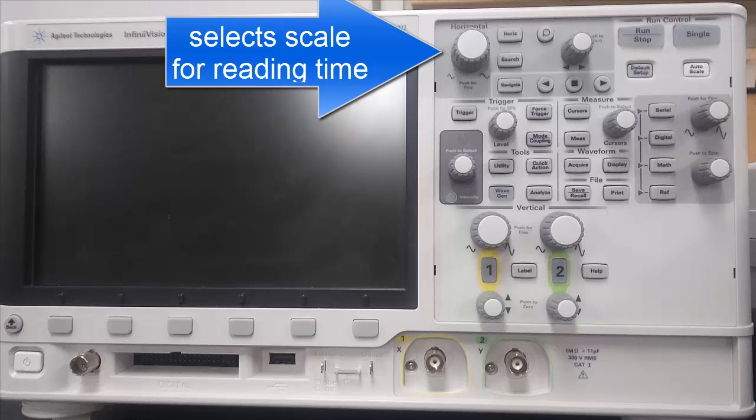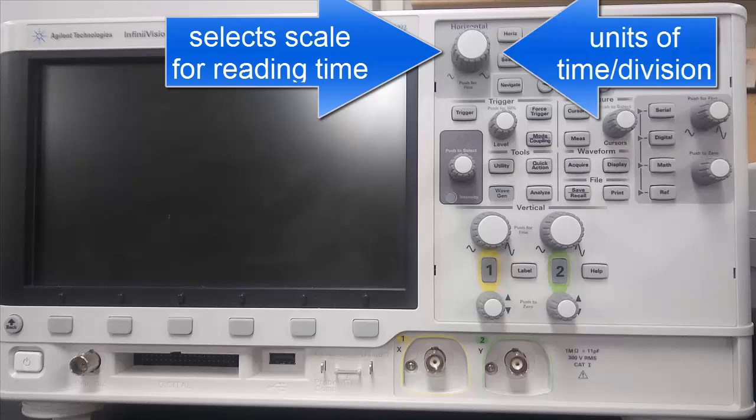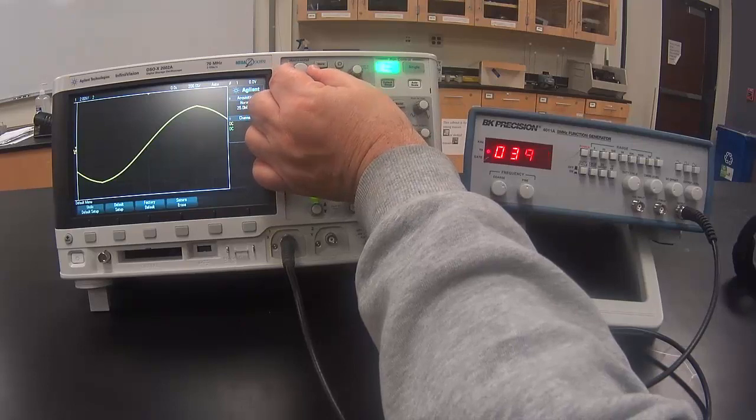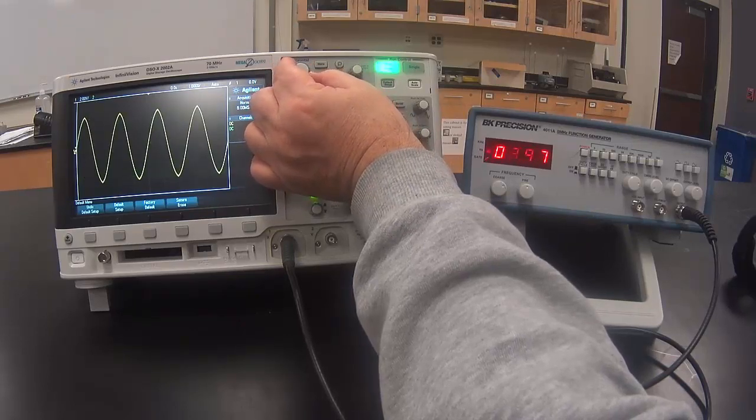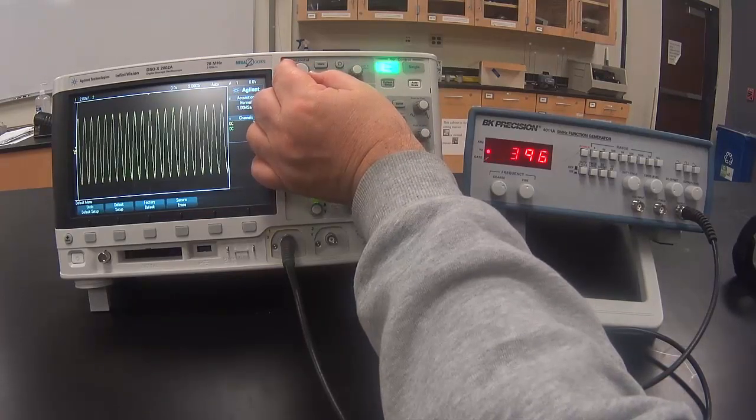This knob is used to adjust the time scale. It is set in units of time per division. Changing to a higher setting will cause more cycles to be displayed on the screen.